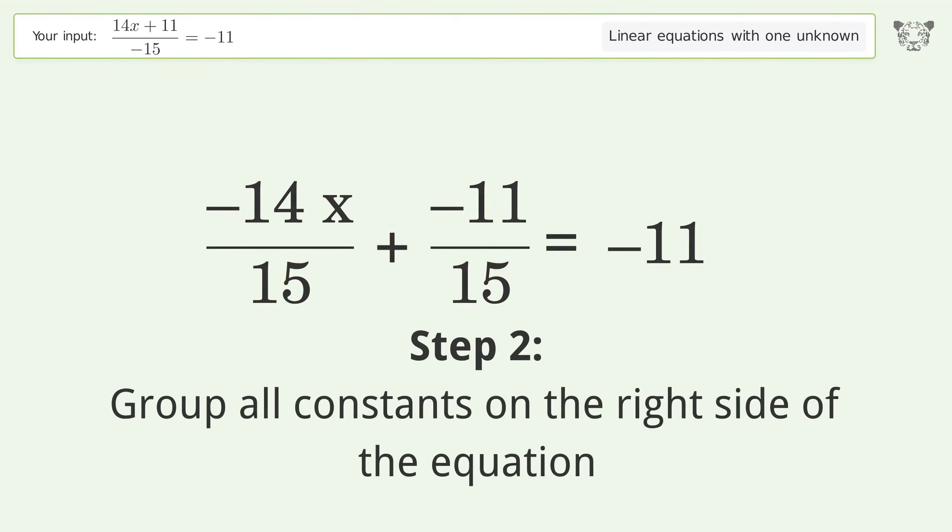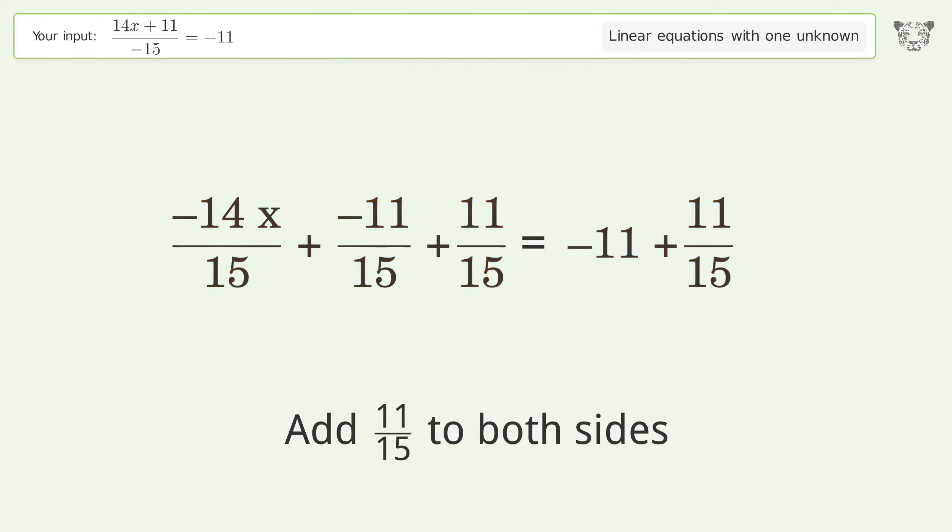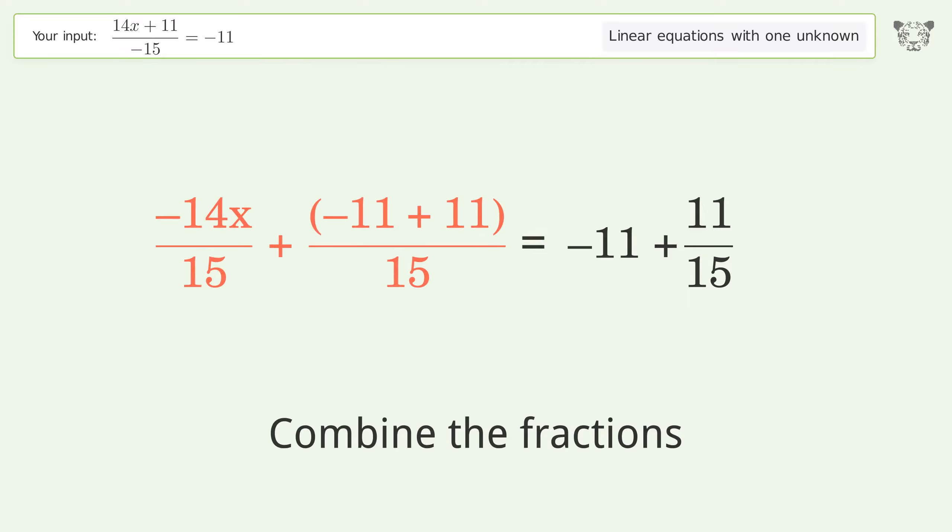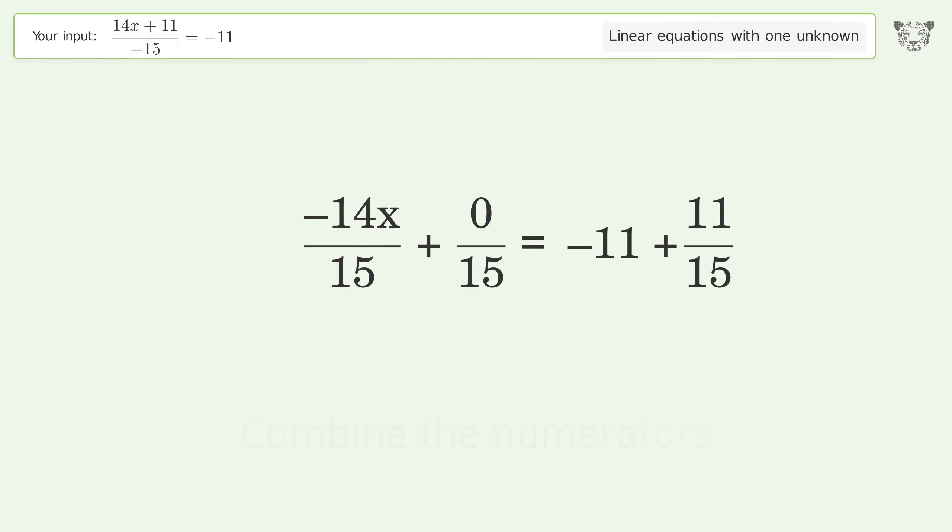Group all constants on the right side of the equation. Add 11 over 15 to both sides. Combine the fractions. Combine the numerators. Reduce the zero numerator. Simplify the arithmetic.